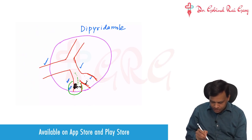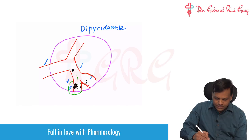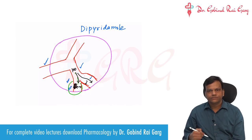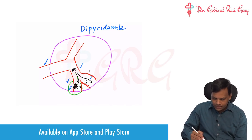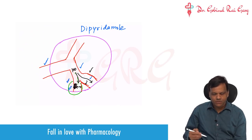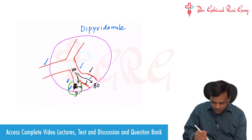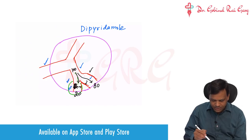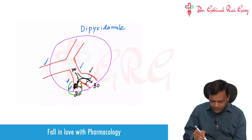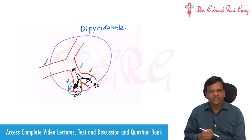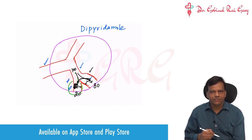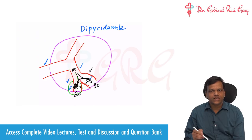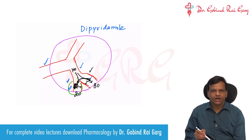The net effect of dipyridamole is: if 100 ml of blood is coming into this area, normally 50 ml was going to the ischemic area and 50 ml to the normal area. But on giving dipyridamole, the normal area becomes more dilated while the ischemic area remains the same, so more blood starts going to the normal area and less blood comes to the ischemic area. Some of the blood from the ischemic area is stolen and given to the normal area — that is why this is called coronary steal. Coronary steal means blood is stolen from the ischemic area and given to the normal area, leading to increased attacks of angina because the ischemic area becomes more ischemic.